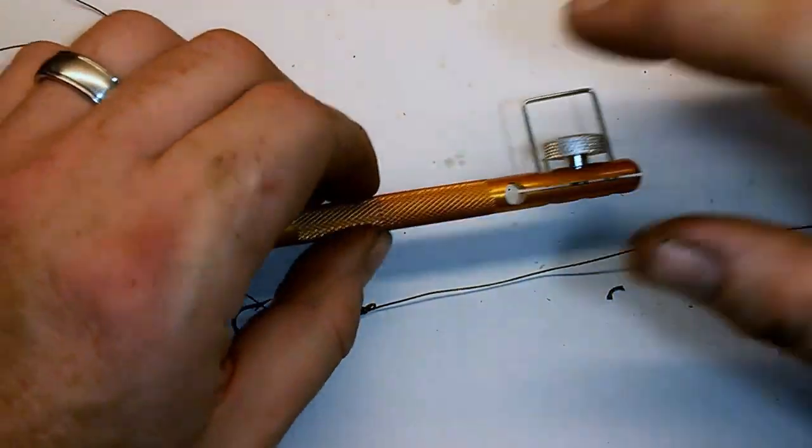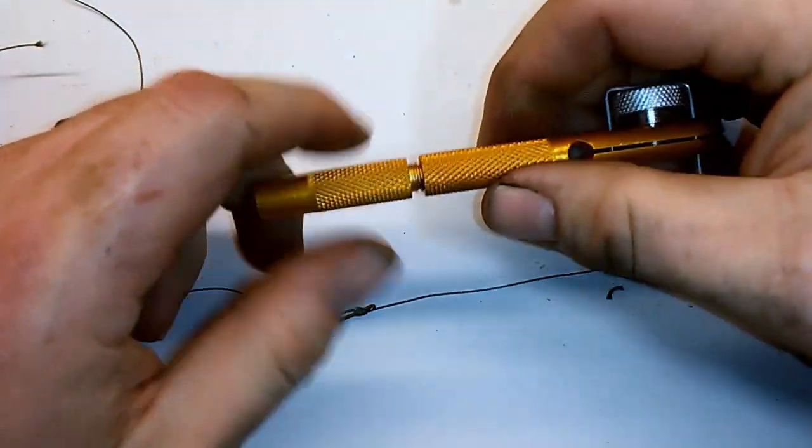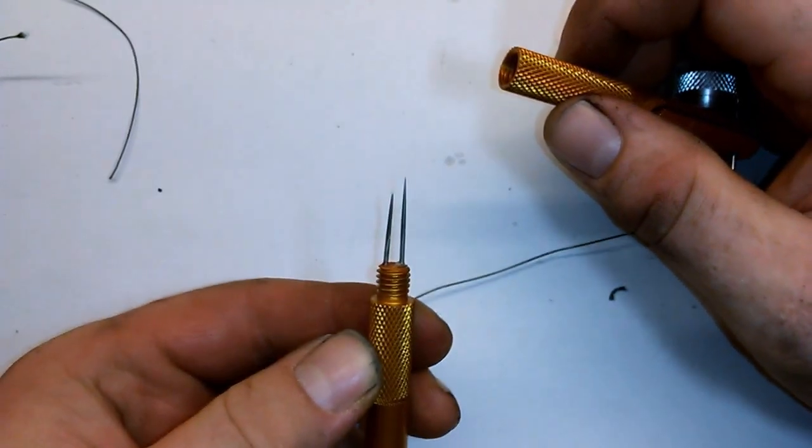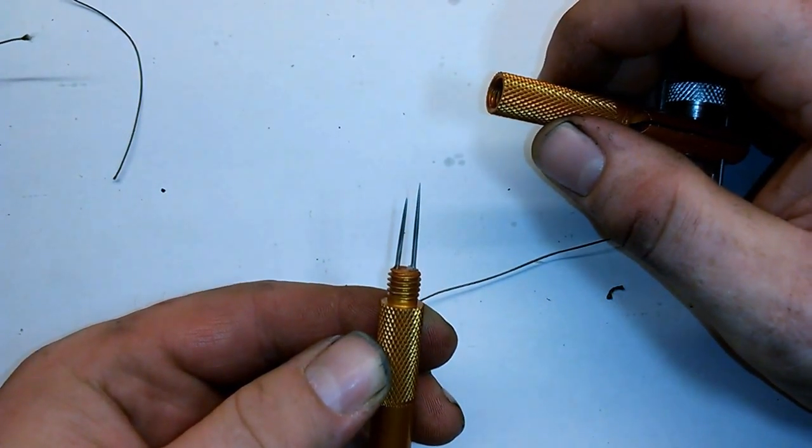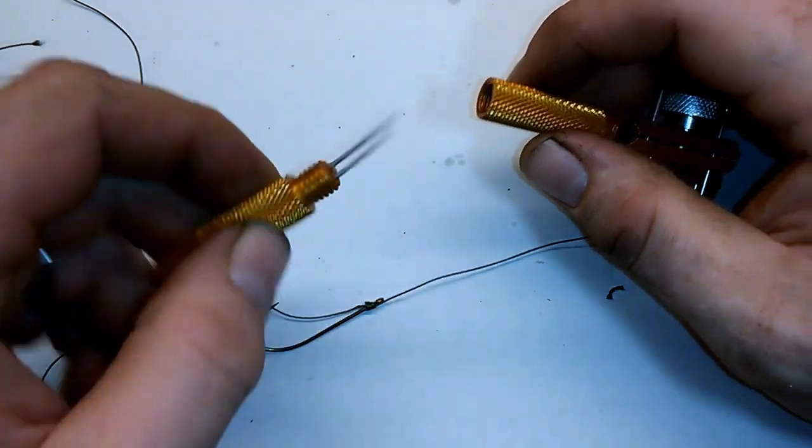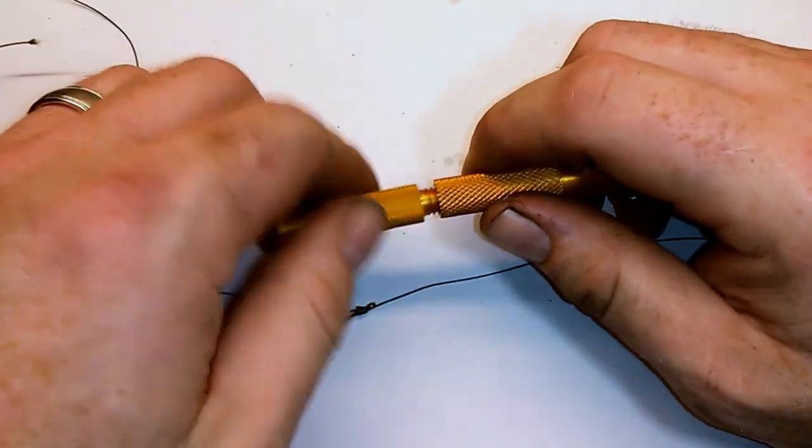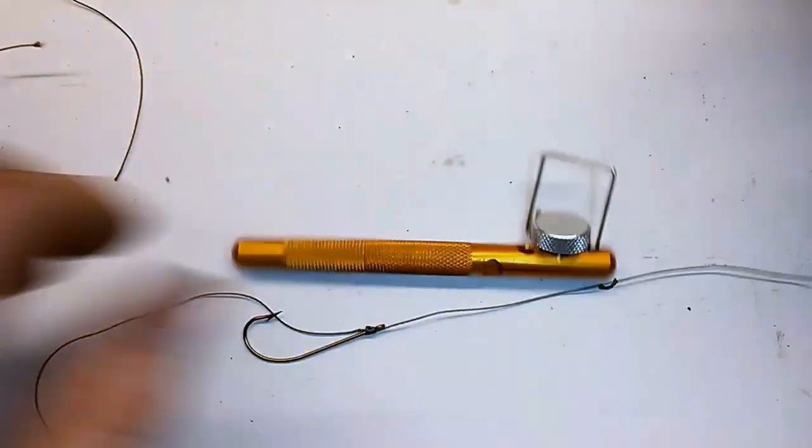It's very light. It's aluminum. There's also another feature on this particular model. A lot of them don't have this, but it's a different way to tie knots. Don't ask me how to tie a knot with it because the instructions were in Chinese and I don't read Chinese. But again, if I find a link to this, I'll put it in the description. Pretty cool tool. Every fisherman should have one. Thank you.